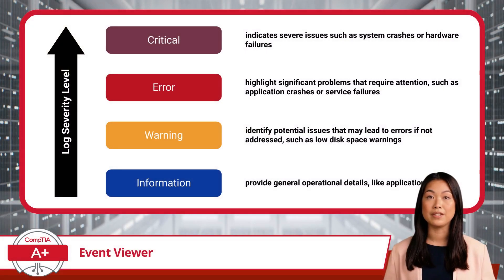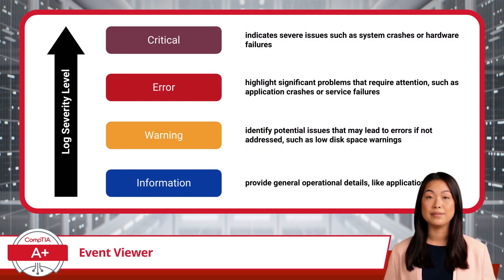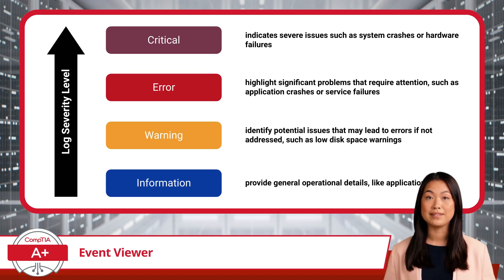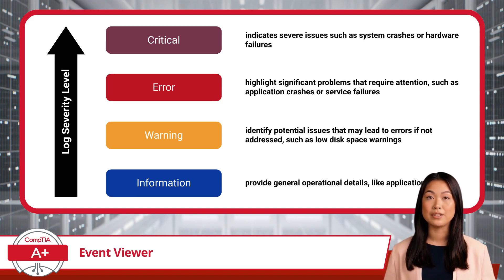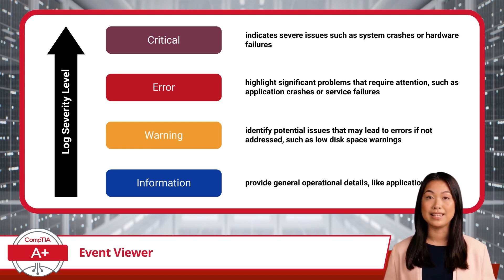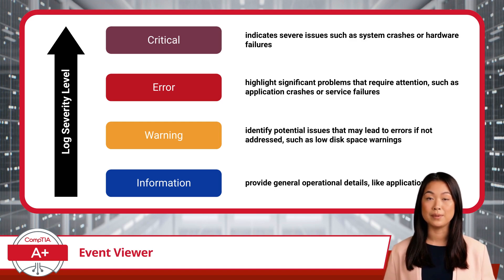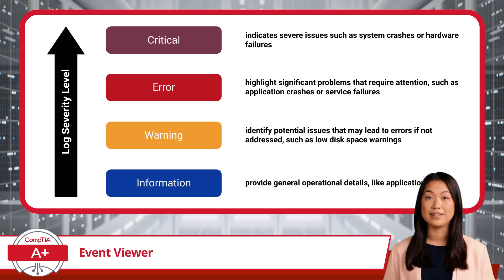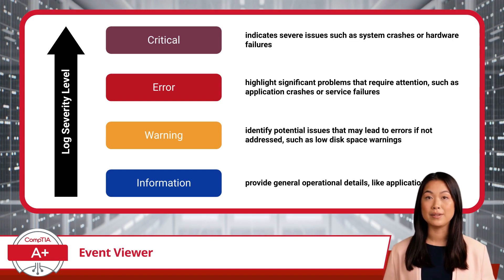Most events within Event Viewer are classified into different levels based on their severity and importance. Critical events indicate severe issues such as system crashes or hardware failures. Error events highlight significant problems that require attention, such as application crashes or service failures. Warning events identify potential issues that may lead to errors if not addressed, such as low disk space warnings. Information events provide general operational details, like application startups. There are other types of events as well, such as audit success and audit failure events, which are tied to security auditing.